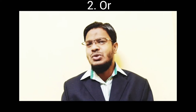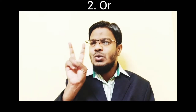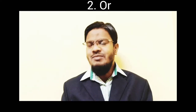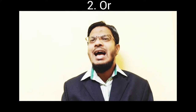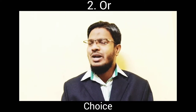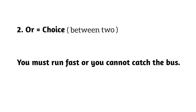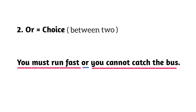Number two: 'or.' Or is used to combine two simple sentences that involve a choice. Look at this example: 'You must run fast or you cannot catch the bus.' You can see 'or' is used to combine two simple sentences that involve a choice between A or B.